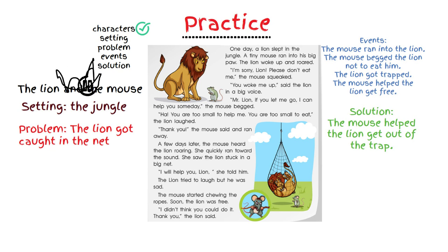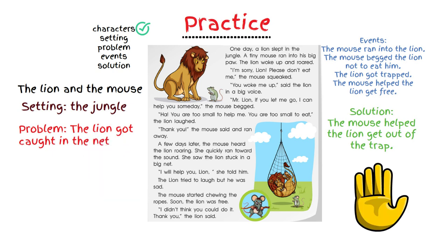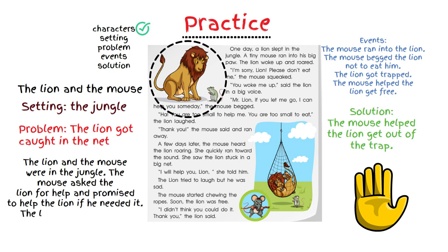Now that we have each part — each finger — let's retell the story. Pause the video to see if you can use the elements of the story to retell it. Remember, you can use your own words, but it should include the parts we discussed. The lion and the mouse were in the jungle. The mouse asked the lion to let him go and promised to help the lion if he needed it. The lion got trapped and the mouse upheld his promise by helping the lion.